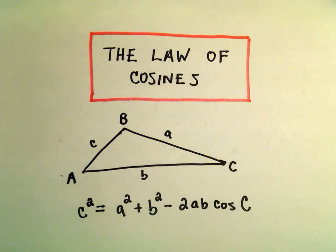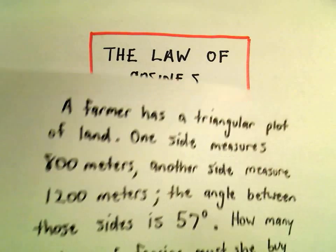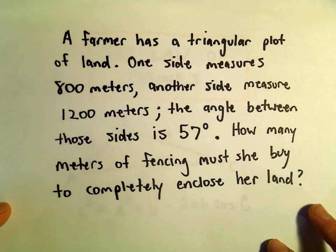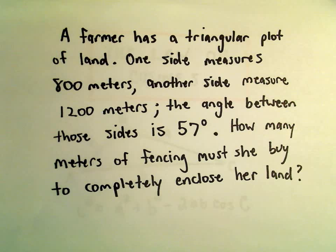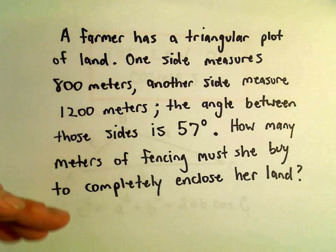So another example here using the law of cosines. Suppose we've got a farmer with a triangular plot of land. One side measures 800 meters, another side measures 1,200 meters, and the angle between those two sides is 57 degrees. We want to know how many meters of fencing she would have to buy to completely enclose her land.